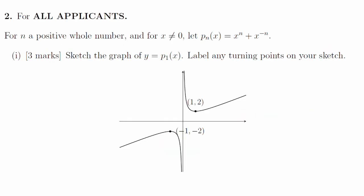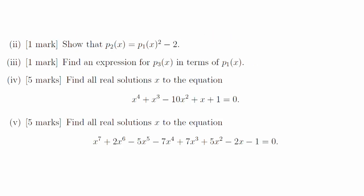Question 2, part i. Here's the graph and here are the turning points. Part 2. If we square p1 and subtract 2, then we get exactly the expression for p2. Part 3. p3 is p1 cubed minus 3p1.